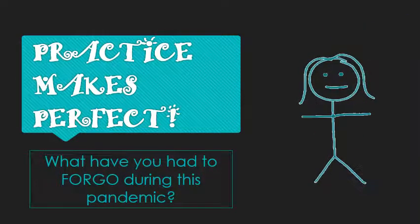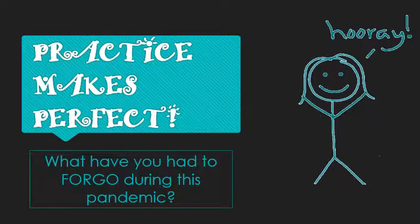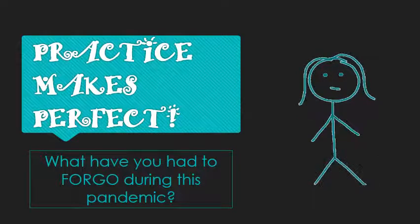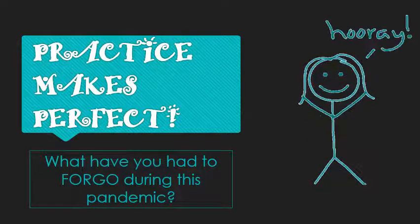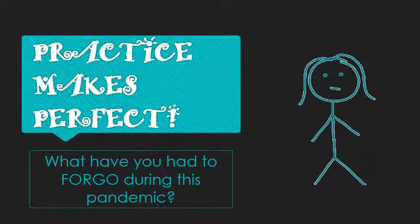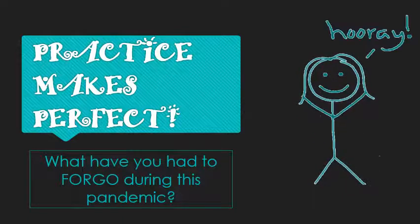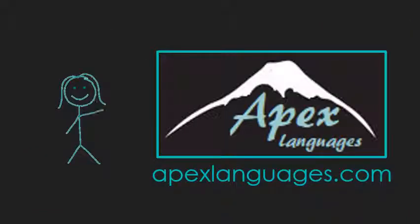With that, let's get down to practicing. What have you had to forego during this pandemic? A lot of us are stuck at home — things are different, even if you're living a relatively normal life. Restaurants are closed, everything's closed, so we've all had to give up something. Write something in the comments or send me an email — what have you had to forgo that you miss the most? Practice using this word. Thank you as always for watching — check out more videos at apexlanguages.com and have a wonderful, healthy, safe rest of your day.